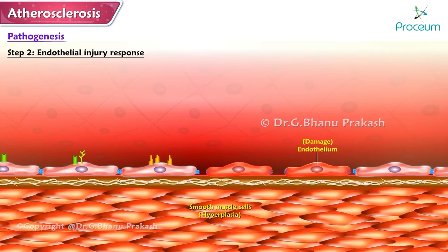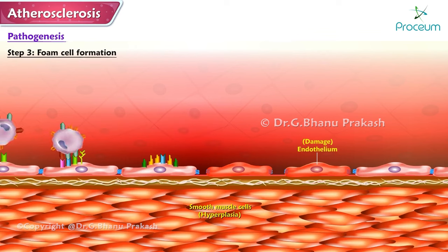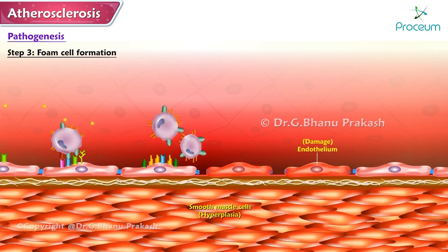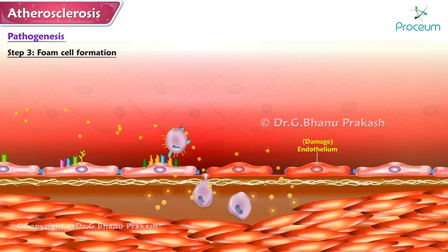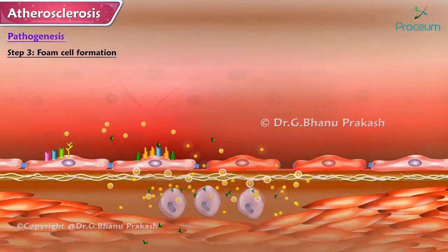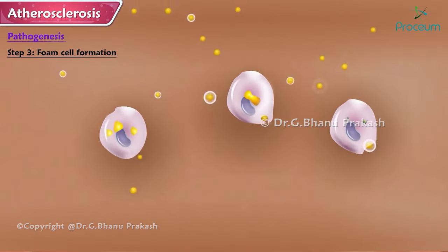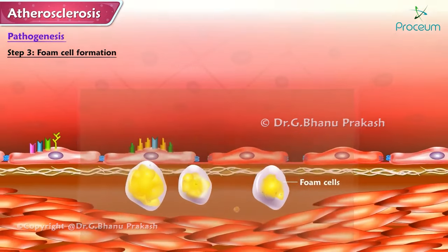The endothelial cells also produce adhesion molecules — vascular cell adhesion molecules (VCAM), intercellular adhesion molecules (ICAM), and P-selectin — to allow leukocytes to adhere to and infiltrate the endothelium. Step 3 — Foam Cell Formation: damage to the endothelium increases permeability to white blood cells, fluids, and lipids. Lipids accumulate underneath the endothelium in the intima, where they are oxidized and engulfed by recruited macrophages, known as foam cells.